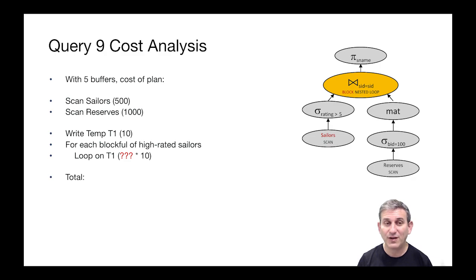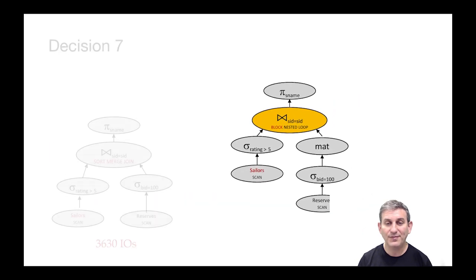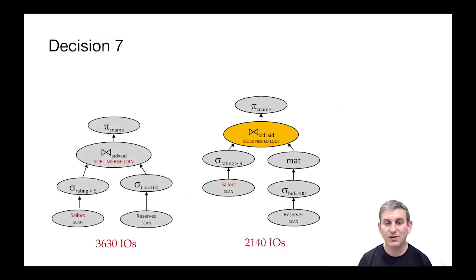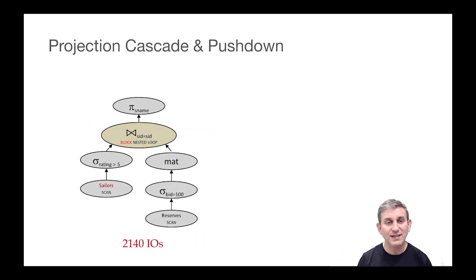And then for each block full of high rated sailors, rather than for each page full, now we have each block full, we're going to loop on T1. So it's some number of times looping on T1, which is of size 10. And the number of times we'll loop is the ceiling of 250 over four, right? Because we have four buffers to use here. So the total cost is this expression. And when you work it out, it is a total of 2140 IOs, which is not only better than the sort merge join, it's certainly better than the page nested loops join we had before. So that's our best plan so far.